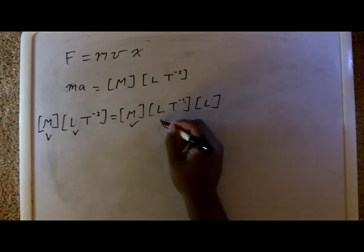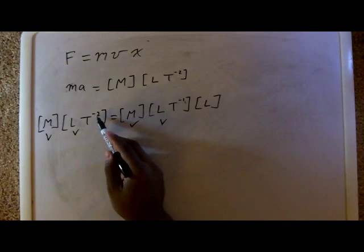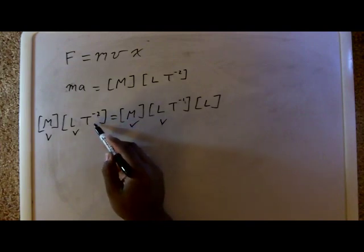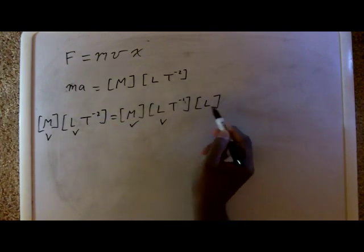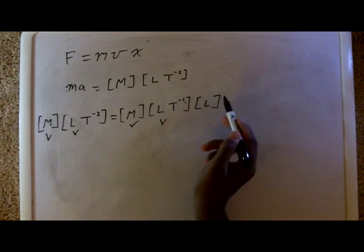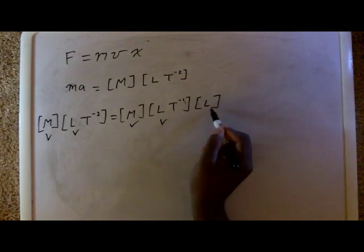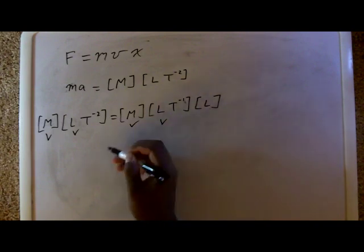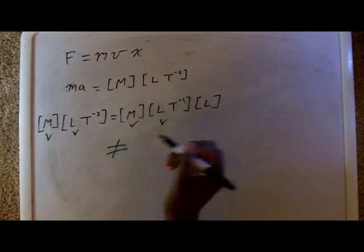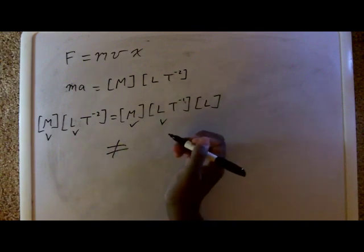We see an l on this side. There's an l on this side. That's good. We see two denominator t's on this side and only one on this side. That's a problem. Plus they have an extra l on this side. So we would say these don't match. These aren't equal to each other.